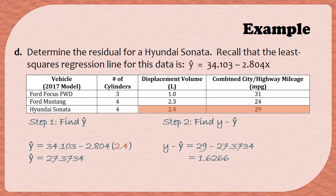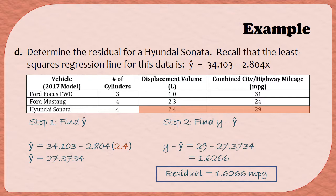Because the units for y are miles per gallon, I have to make sure I label my answer. So the residual is 1.6266 miles per gallon. Notice that our predicted value of just over 27 was below the actual value of 29. So when your prediction is an underestimate, you will end up with a positive residual.